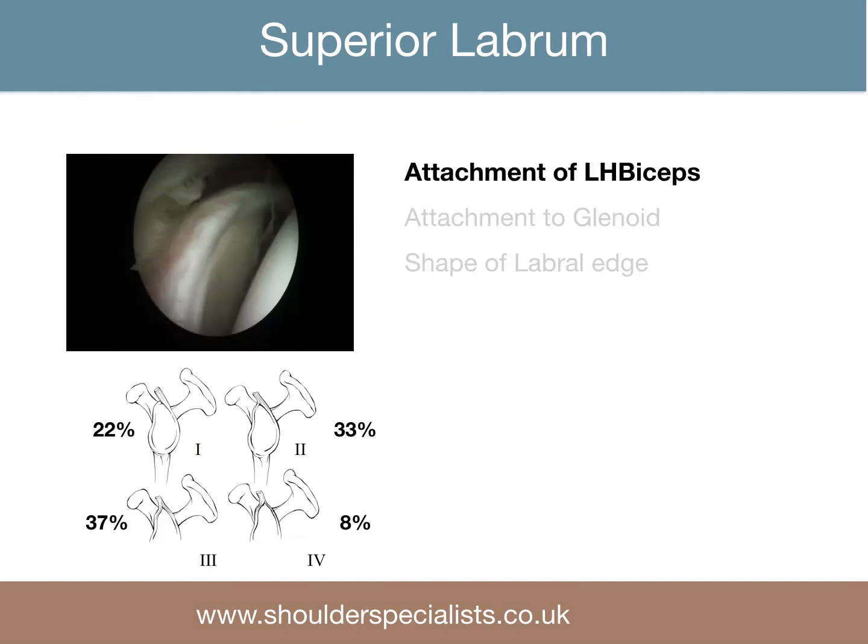The long-headed biceps attaches predominantly to the posterior labrum, as in types 1 and 2, often to both the anterior and posterior labrum, and more rarely to the anterior labrum alone.